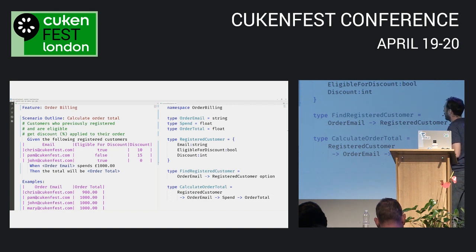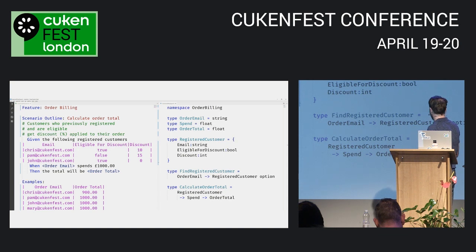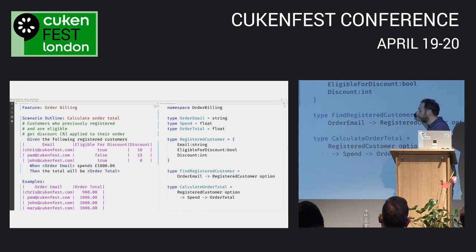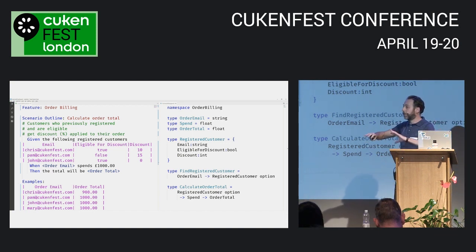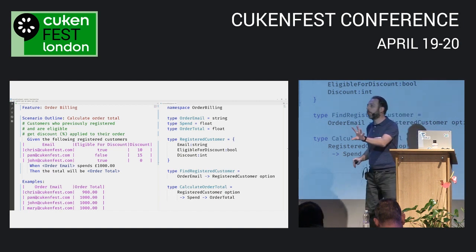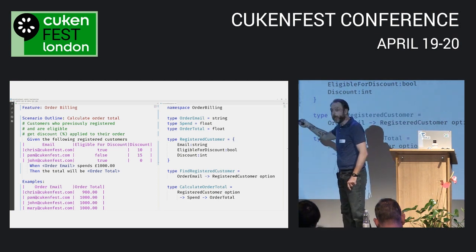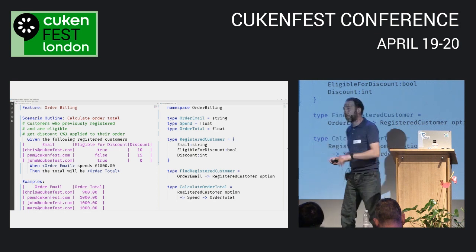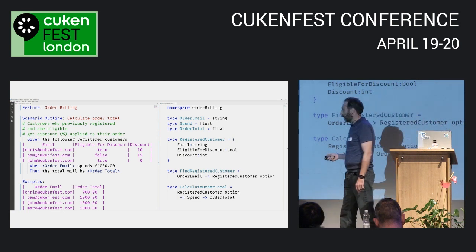The only option is to pass one registered customer in. I know the order email is the same as the registered customer email, so I can remove the order email from the function signature and still have the same information. And if I make the registered customer an option, look what happens: the output of 'find registered customer' simply becomes the input for 'calculate order total'. This is a pipeline — and because I've got that amazing option type encapsulating the business rule that you may or may not be in the list, that second function is now pure.